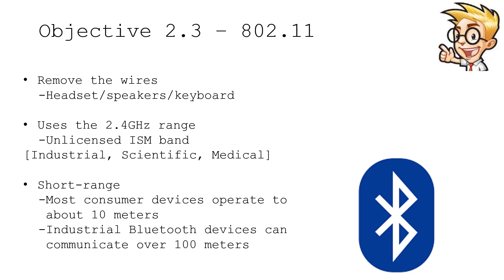The ISM portion of the 2.4 gigahertz band doesn't require any special licensing from the government. Anyone can use these particular frequencies, which is why both Bluetooth and 802.11 commonly use the 2.4 gigahertz band. Bluetooth devices generally only communicate in small areas around you — we often refer to this as a personal area network.